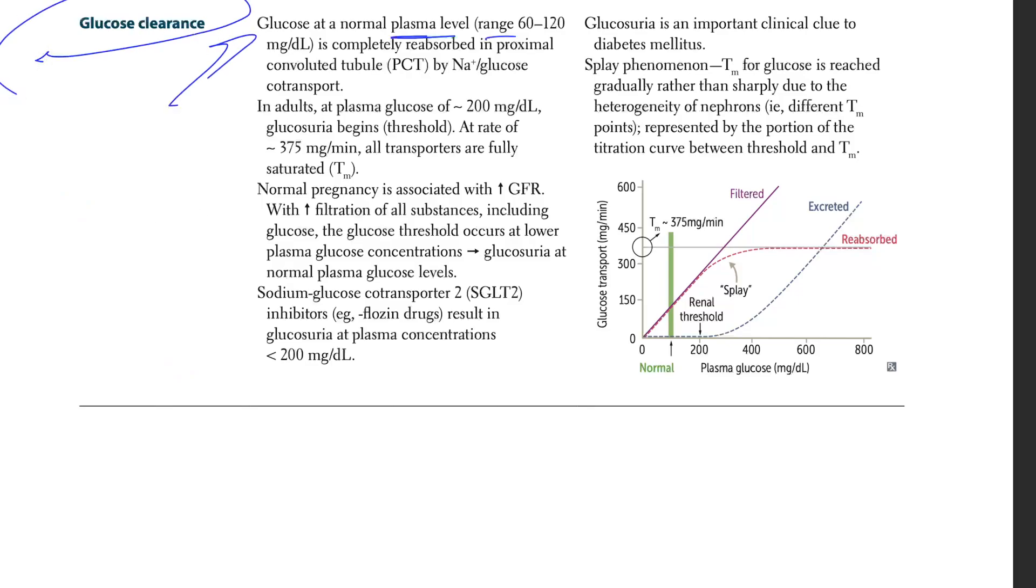Here we're talking about glucose clearance. Glucose at normal plasma level range 60 to 120 is completely reabsorbed in proximal convoluted tubule PCT by sodium glucose transporter. Remember sodium glucose transporter SGLT2s? Where do you have SGLT1? In the intestine, where you have sodium and glucose transporting. Where do you have two? In the kidney, in the PCT. What are they doing? They are reabsorbing most of your sodium and most of your glucose.